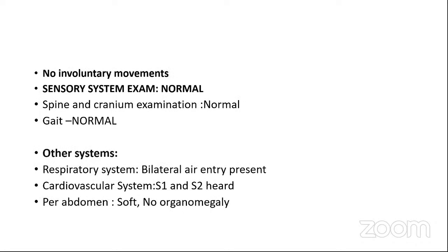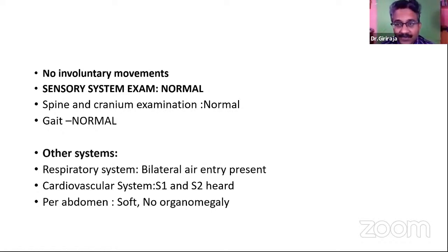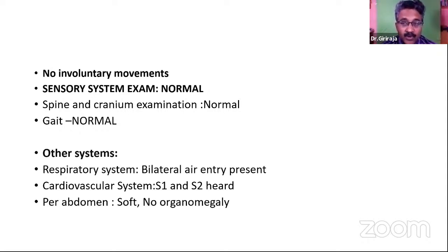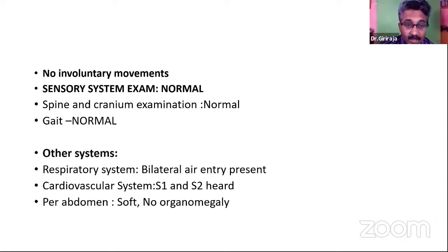No involuntary movements. Sensory system examination is normal. Spine and cranial examination normal. Gait is normal. In muscle disease, gait provides important clues: inability to flex neck in supine suggests neck flexor weakness; inability to extend neck in prone suggests neck extensor weakness; inability to close eyes suggests facial muscle weakness. Gower's sign — using own body to stand up — indicates proximal limb-girdle weakness. Knee buckling indicates quadriceps weakness. Waddling gait indicates hip girdle muscle weakness. Inability to walk on heels indicates dorsiflexor weakness; inability to walk on toes indicates plantar flexor weakness.